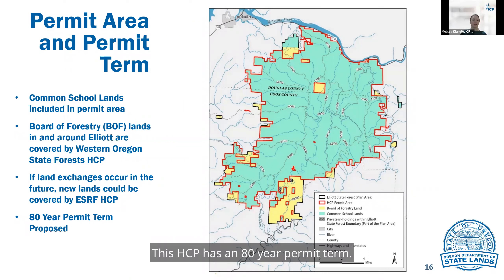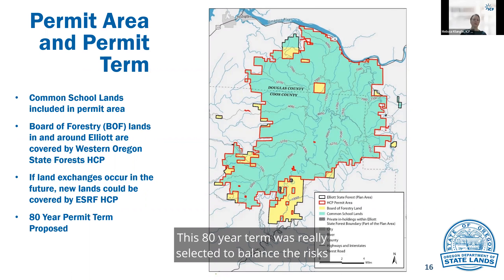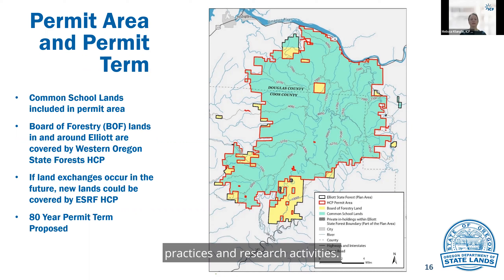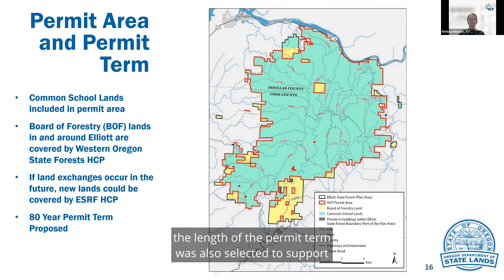This HCP has an 80-year permit term. This 80-year term was selected to balance the risks associated with either shorter or longer terms. A term of less than 80 years would substantially reduce DSL's regulatory certainty to conduct long-term forest management practices and research activities. In addition, the length of the permit term was also selected to support the implementation of a successful conservation strategy.